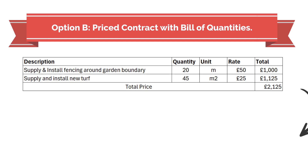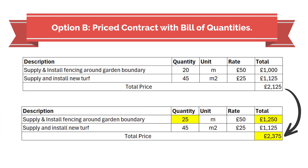However, unlike Option A, the price isn't fixed. The final price is based on a remeasure carried out at the end of a project or during the interim payment cycle. Payment is made based on actual measured quantities multiplied by the associated rate. So it's that simple, right? The contractor is paid for the measured work times the rate in the contract.